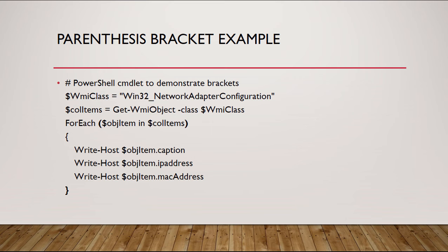We see object item in collection items, and if those three — caption, IP address, and MAC address — exist, then we'll be able to see those because we first told it to do so using those brackets above. Another thing this does for us is it resolves certain problems. If PowerShell can't decide in which order to process the various different components in the brackets, then the parenthesis brackets will help make sure that there's order to this.